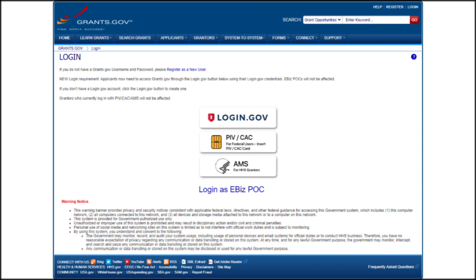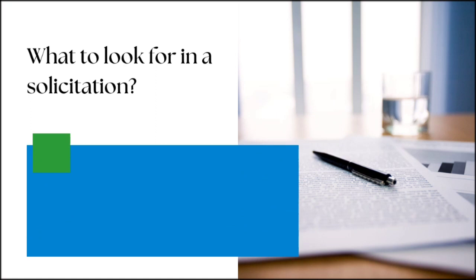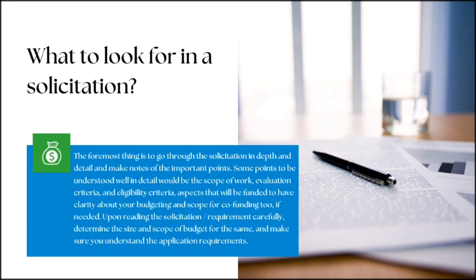Now, moving on to the most important aspect: what to look for in a solicitation. The foremost thing is to go through the solicitation in depth and detail and make notes of the important points. Some points to be understood well in detail include the scope of work, evaluation criteria, eligibility criteria, and aspects that will be funded — to have clarity about your budgeting and scope for co-funding if needed. Upon reading the solicitation requirements carefully, determine the size and scope of the budget and make sure you understand the application requirements.